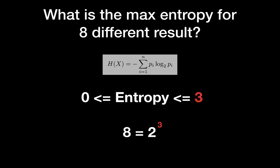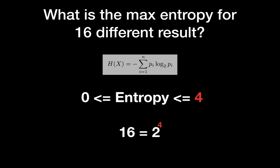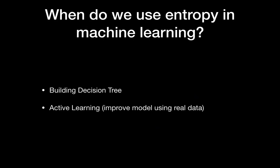So you can easily get the maximum entropy from this equation as well. Importantly, where do we use entropy in machine learning? There are many places actually, but here are the two most popular examples: first is building a decision tree, and second is active learning.